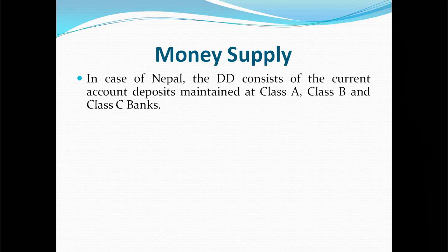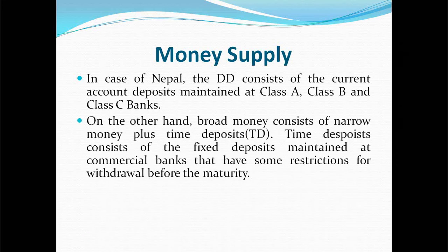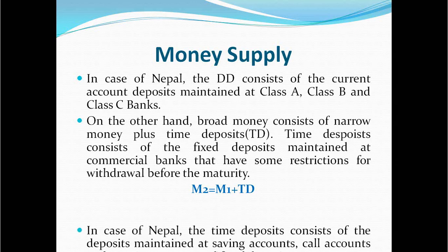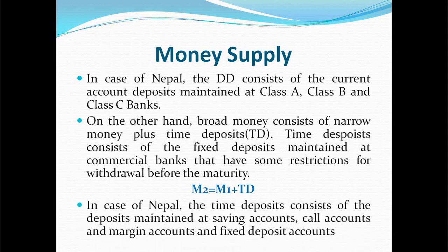In the case of Nepal, demand deposits consist of current account deposits maintained at Class A, Class B, and Class C banks. On the other hand, broad money consists of narrow money plus time deposits. Time deposits consist of fixed deposits maintained at commercial banks that have some restriction for withdrawal before maturity — that is, M2 equals M1 plus time deposits. In Nepal, time deposits include saving accounts, call accounts, margin accounts, and fixed deposit accounts.